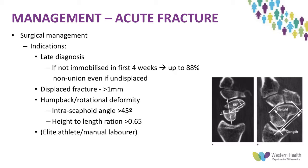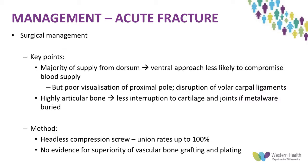Key points in surgical management: because the majority of blood supply comes from the dorsum of the scaphoid, a volar approach is less likely to compromise blood supply but provides poor visualization of the proximal pole and risks disruption of volar carpal ligaments. Because the scaphoid is highly articular, a metal implant buried within the bone — such as a headless compression screw — is better for the surrounding joints. The evidence points to headless compression screws with union rates up to 100%. No evidence was found for superiority of vascular bone grafting or plating in the acute setting.